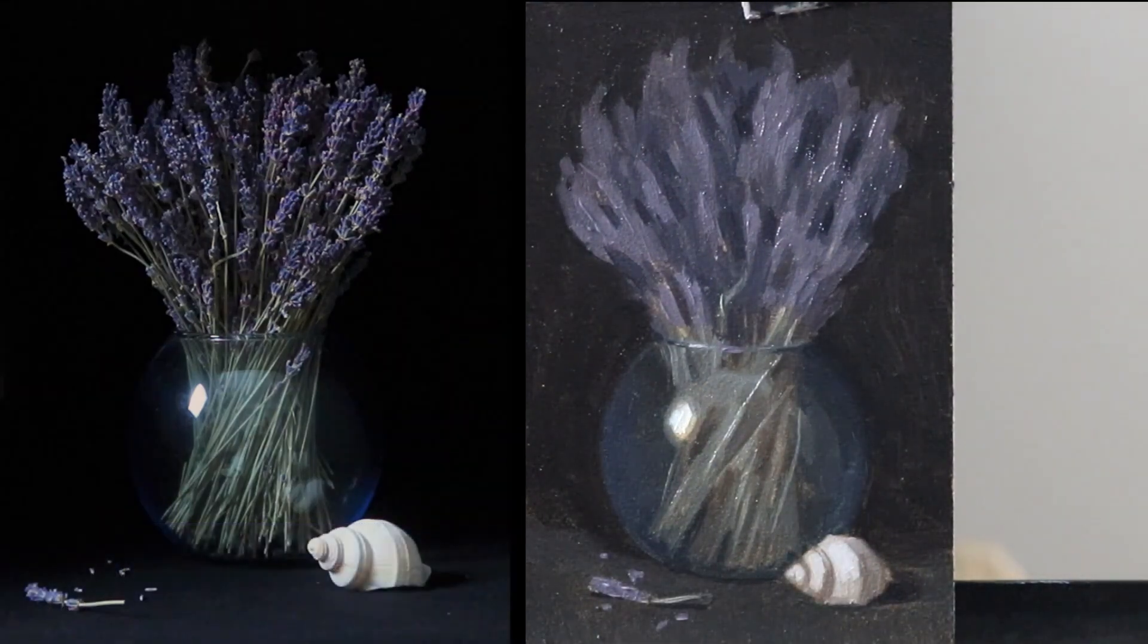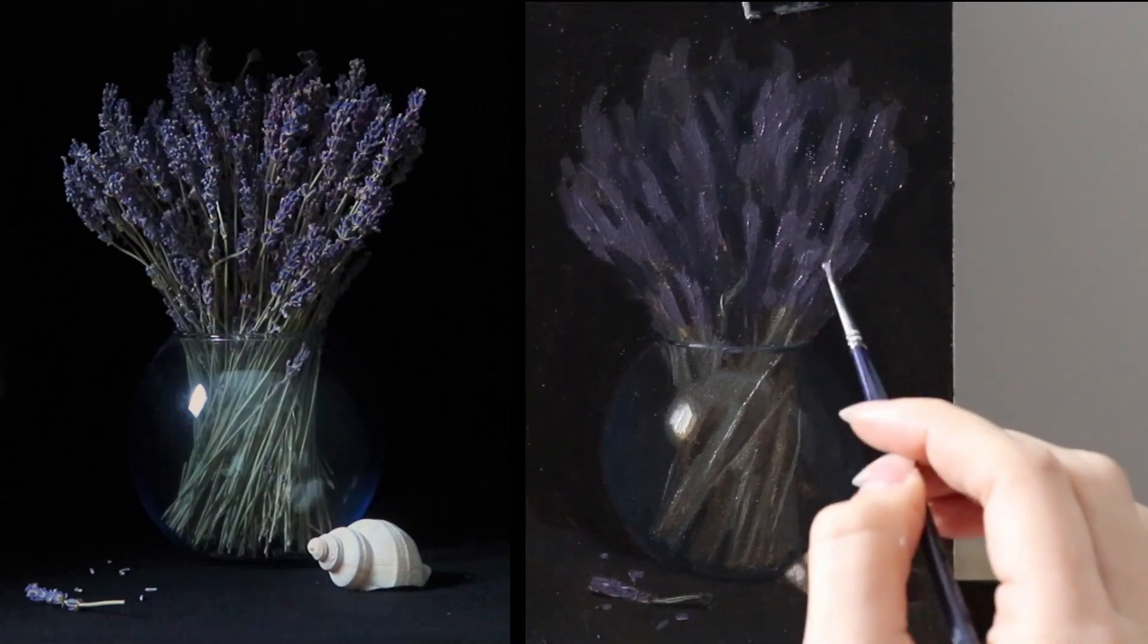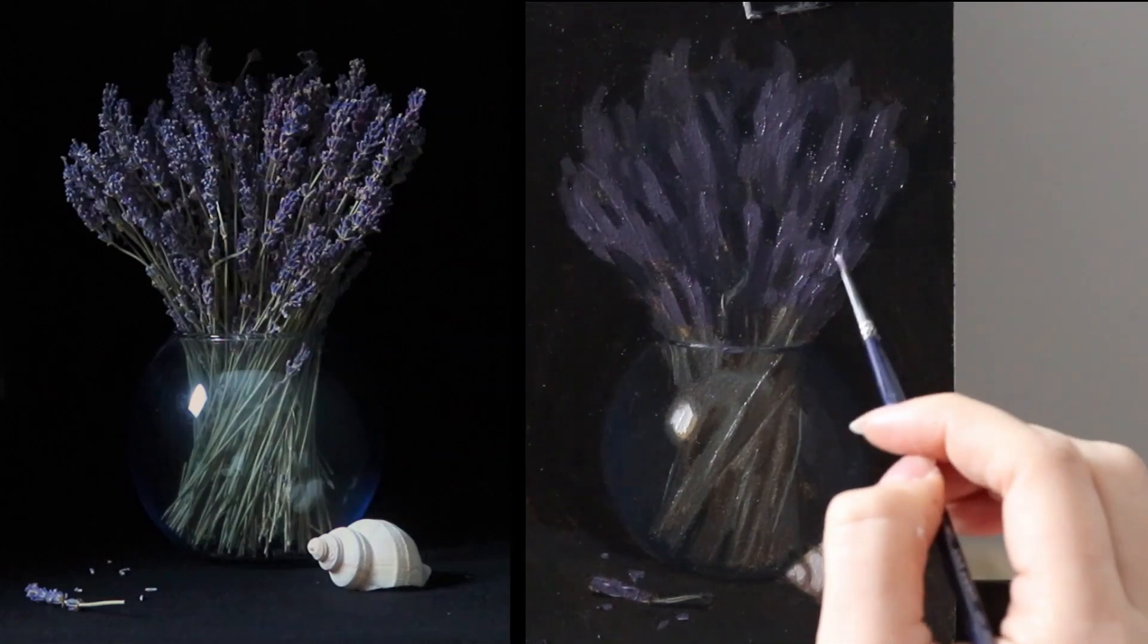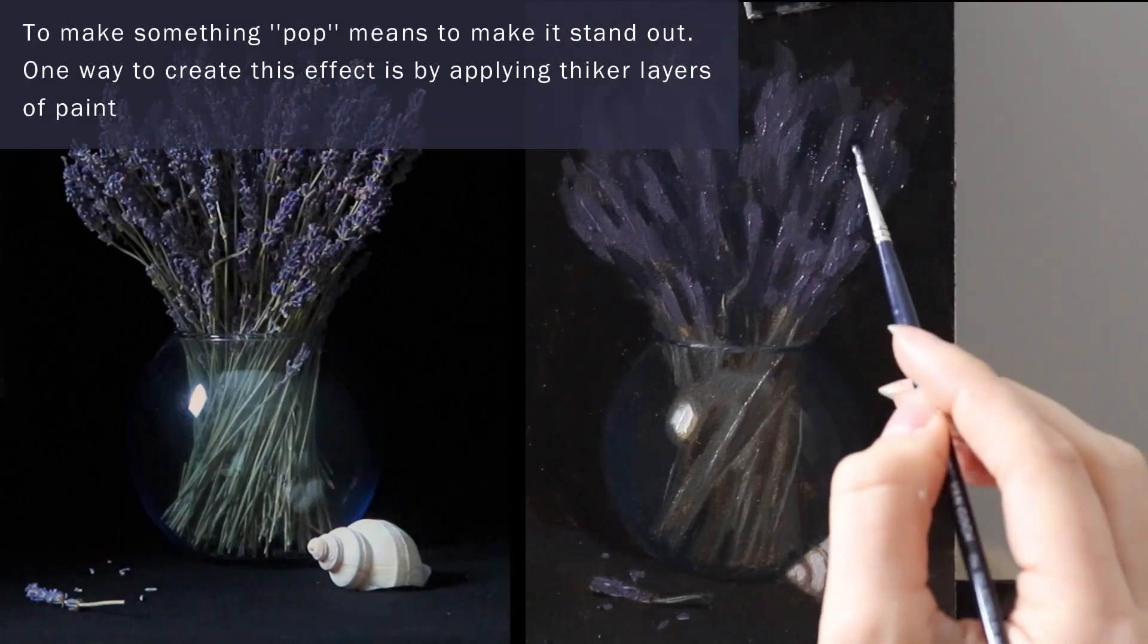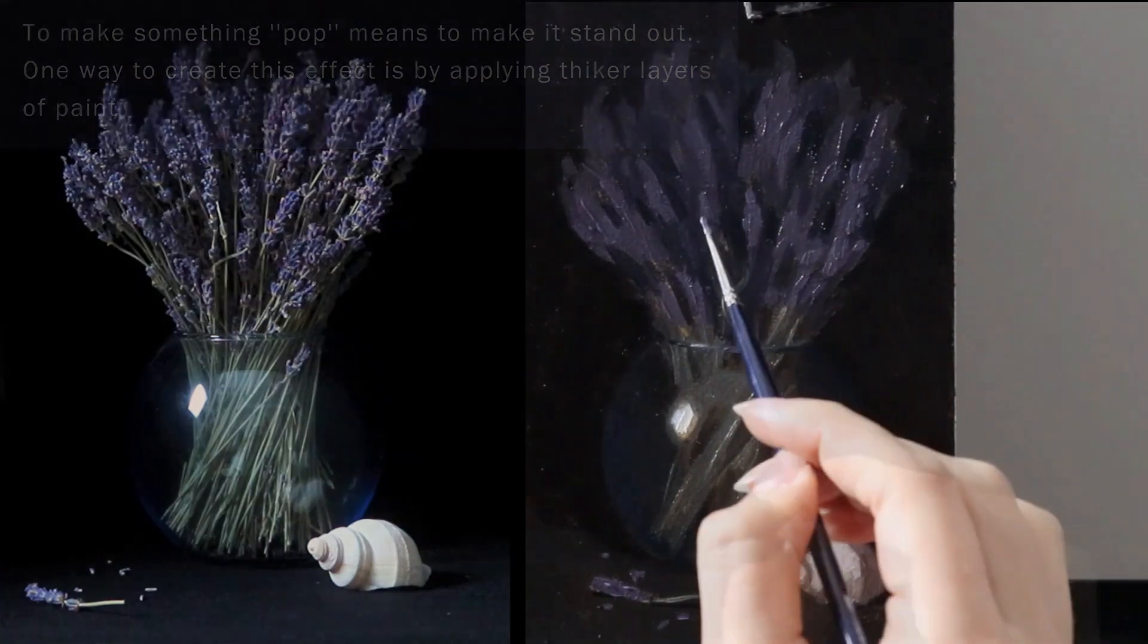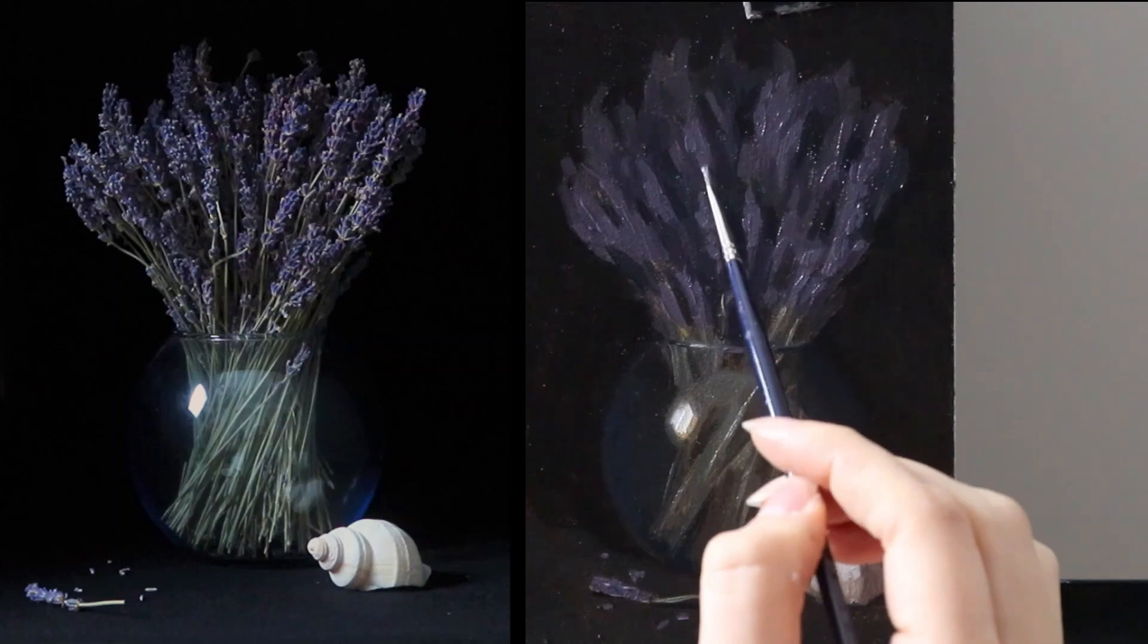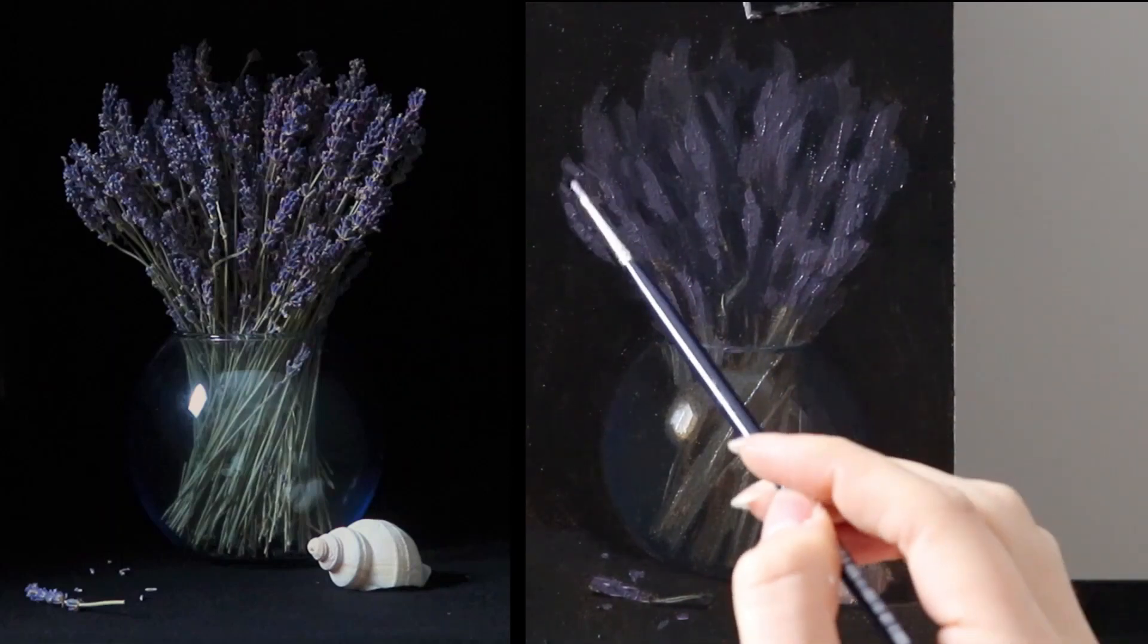Having added so much more contrast and light effect in the shell and in the stems, I now feel I can also do this in the lavender flowers. To make these brighter areas of the flower pop, meaning stand out from the flowers more drawn back into the shadow, I paint these with a thicker layer of paint. This texture and design decision is also something to potentially bring into the main painting.